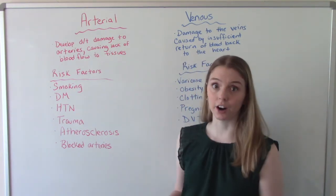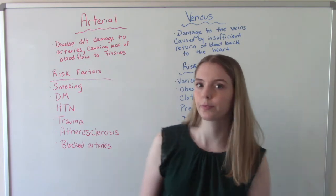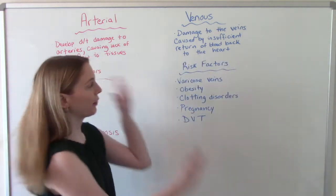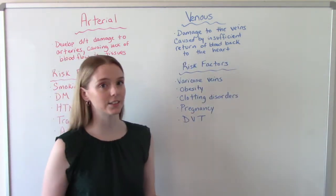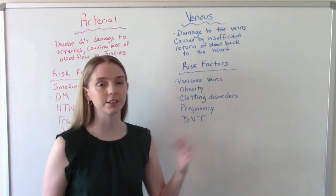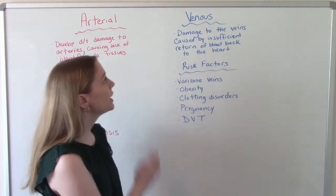Additional risk factors for arterial ulcers include high blood pressure, trauma like getting a broken bone, atherosclerosis which is the thickening of the arteries, and then having a blocked artery.